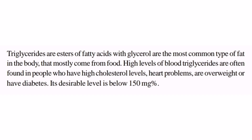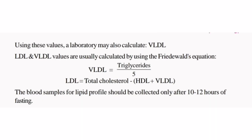Total cholesterol, triglycerides, HDL, LDL, and VLDL are calculated as follows. VLDL is calculated using the Friedewald equation: triglycerides divided by 5. LDL is calculated as: total cholesterol minus (HDL plus VLDL). Total cholesterol is the sum of HDL, LDL, and VLDL. The amount of cholesterol will be tested.